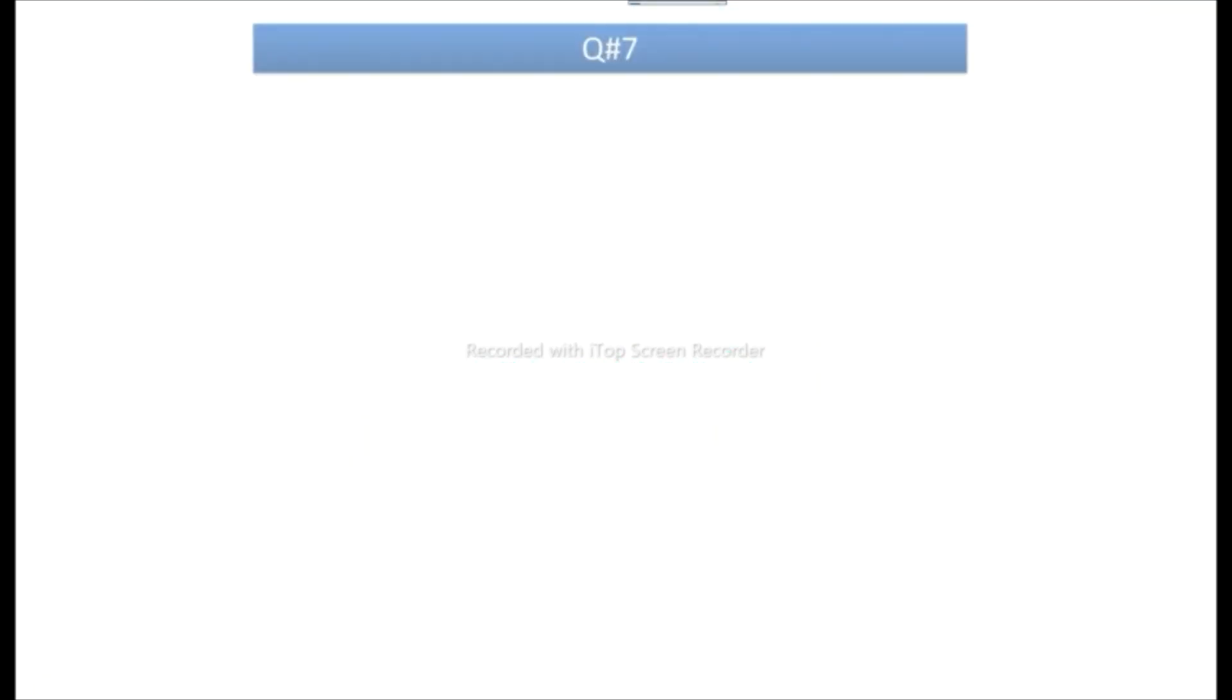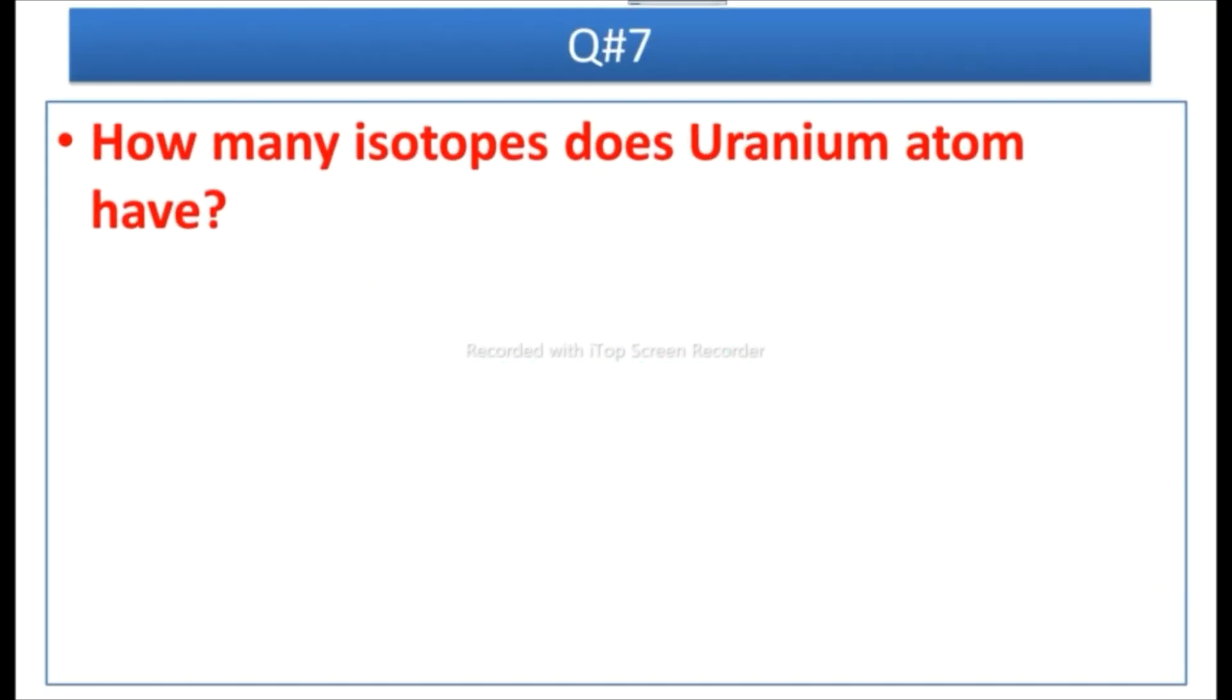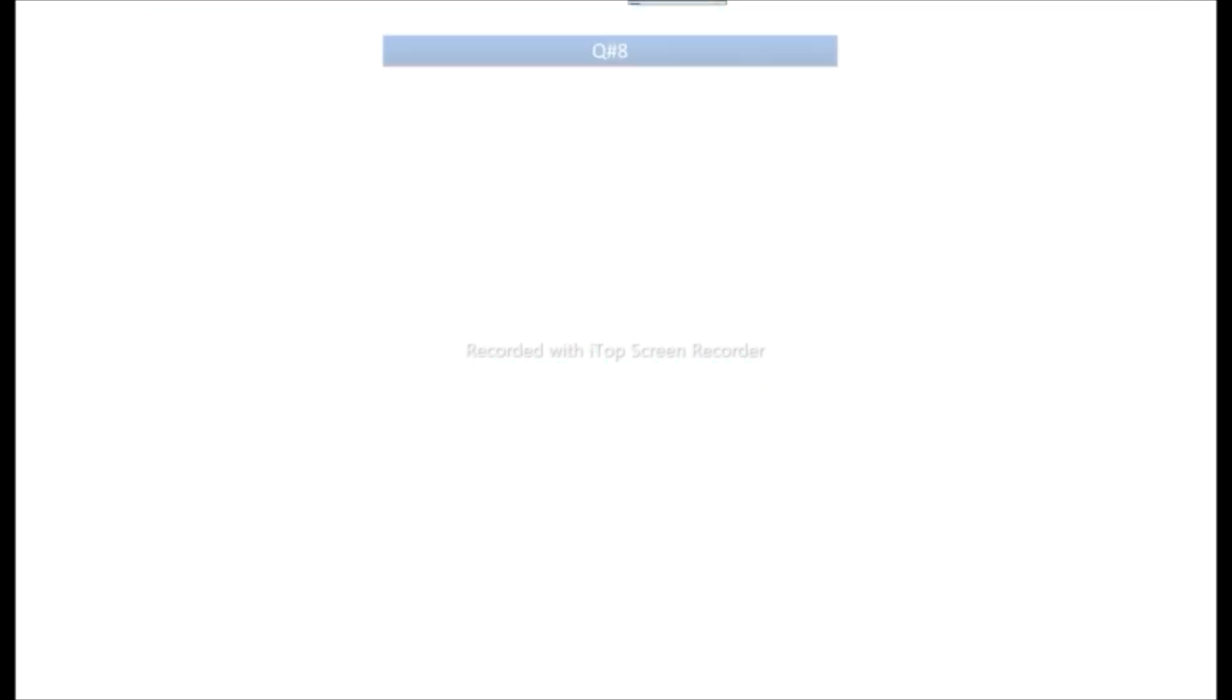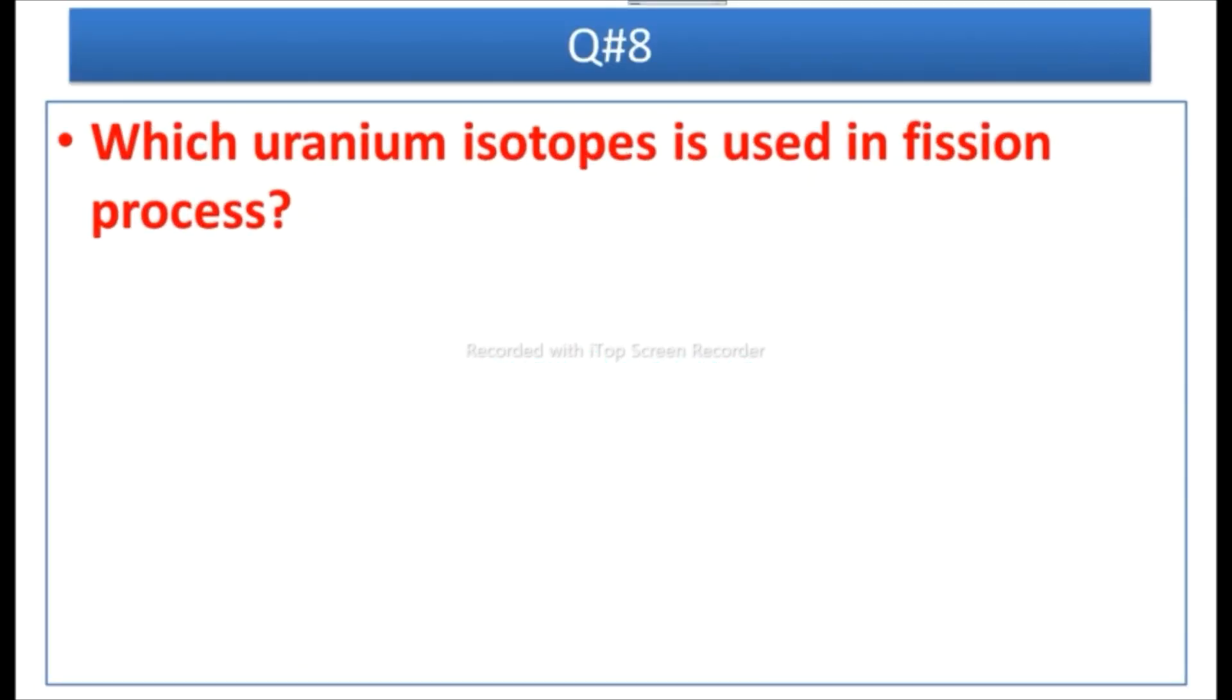Question number seven: How many isotopes does uranium atom have? Answer: Uranium atom has two isotopes.